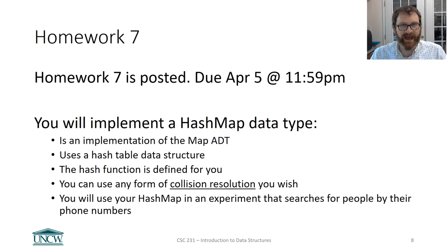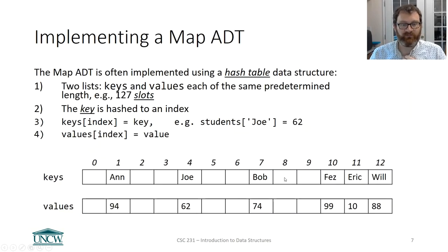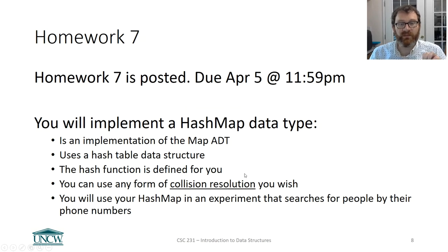So you will implement a hash map data type. Think of it as your version of a Python dictionary. Why are you doing it if the dictionary is already there? Well, I want you to understand and appreciate how the data structure works for a hash table. So I'm going to give you the hash function. I'm going to tell you what it needs to be. You can use any form of collision resolution that you wish. So if two things hash to index 10, say Eric hashes to index 10, how do you resolve that? I don't care. You can use linear probing. You can use quadratic probing. You can use chaining. It's entirely up to you to decide. So you're going to implement a very basic map data type.